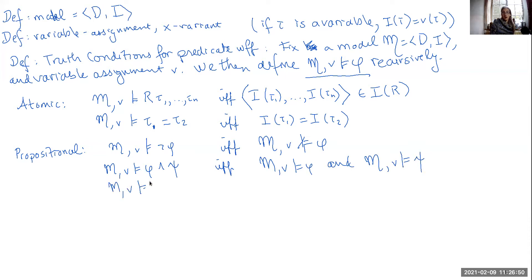A disjunction is true if and only if at least one of the disjuncts is true. As usual, this is an inclusive OR. And then we have our conditionals. These are going to be true if either the antecedent is not true or the consequent is. So nothing new in the propositional case.